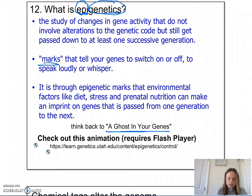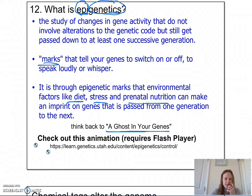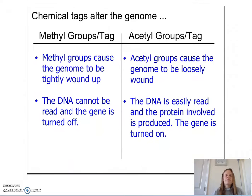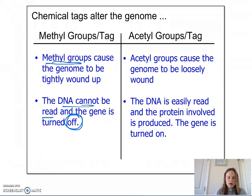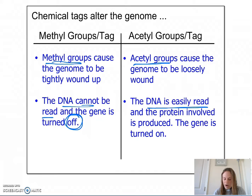Think back to 'A Ghost in Your Genes' — factors like diet, stress, and prenatal nutrition can make an imprint on genes that gets passed from one generation to the next. There are chemical tags that alter the genome called the methyl group and the acetyl group. Methyl groups cause the genome to be tightly wound up, so DNA cannot be read, no protein is produced, and the gene is turned off. Acetyl groups cause the genome to be loosely wound, so DNA can be read, the protein is produced, and the gene is turned on — the trait is expressed.